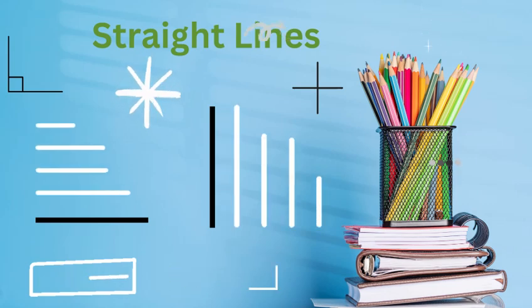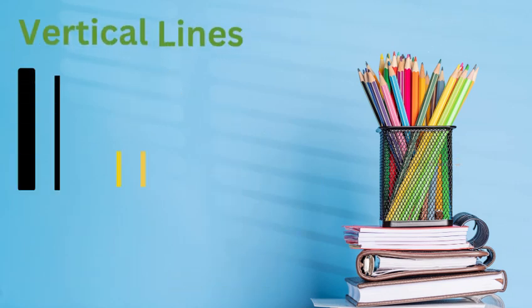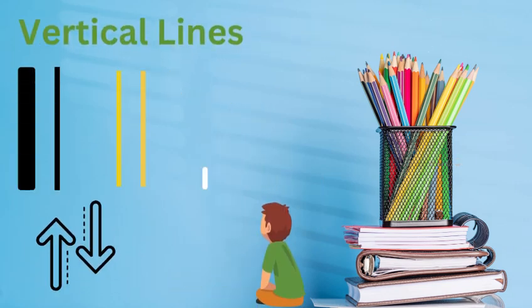Straight lines go up, go down, and across. They're super straight and super cool. First, we have vertical lines. Vertical lines go straight up and down, like tall trees and skyscrapers. Let's learn by example.